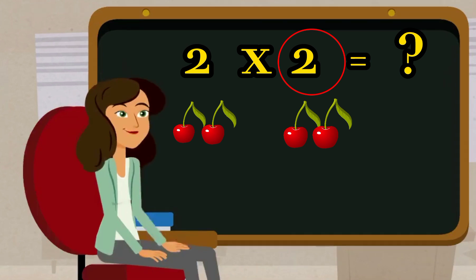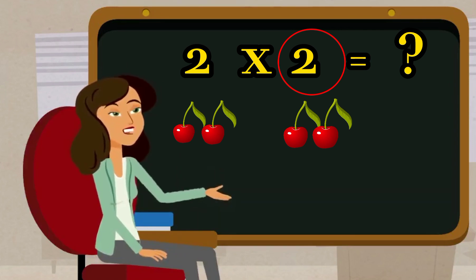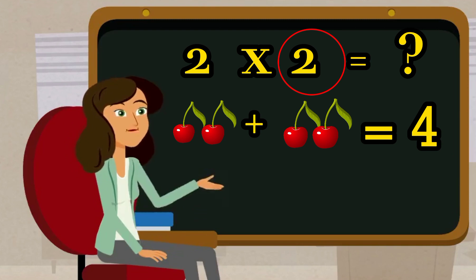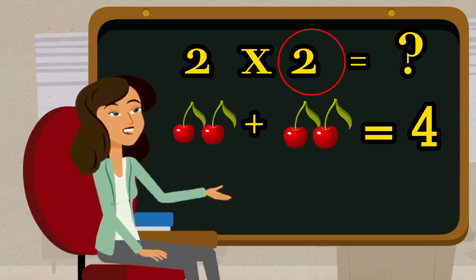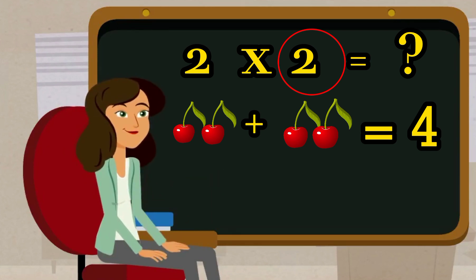So two plus two. What will be our answer when we are adding them all together? Two plus two is equal to four. It means two into two is also equal to four. Well done.